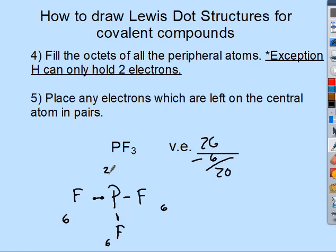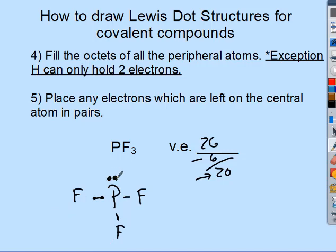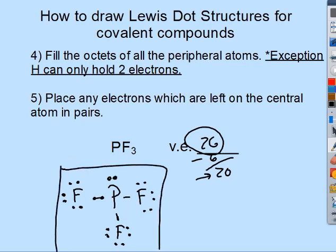Don't forget about the central atom. I need six plus six plus six plus two, which is twenty — and I have twenty — so I can add them as lone pairs. You must put them in pairs: two, four, six, eight on each atom. Double-check that you've used all twenty-six electrons, no more no less. This is the correct Lewis structure for PF3.